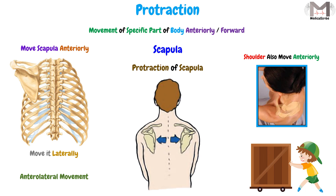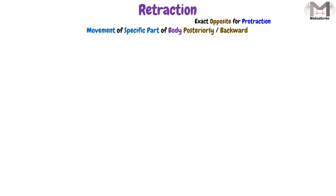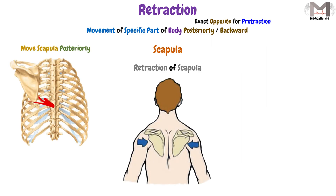So the meaning of the protraction is to move a specific part of the body anteriorly. While the retraction, on the other hand, is the exact opposite term of the protraction, in which we use it to describe the movement of a specific part of the body posteriorly or backward. So if we use it with the scapula or the shoulder blade, the retraction will make the scapula move posteriorly, and at the same time it will move medially toward the midline of the body or toward the vertebral column.